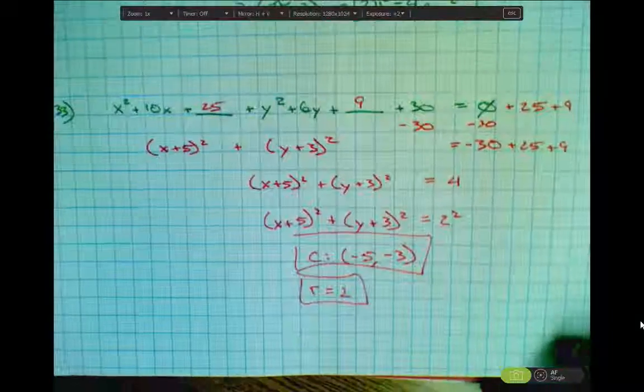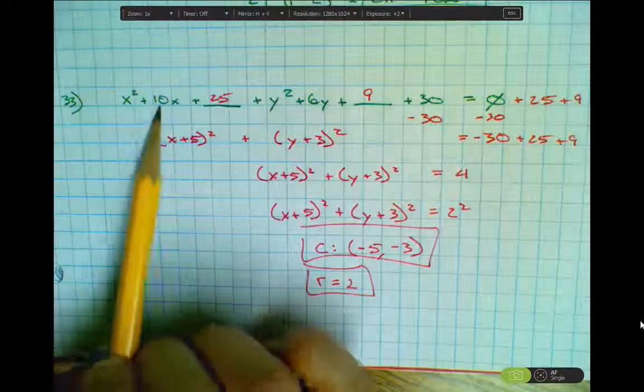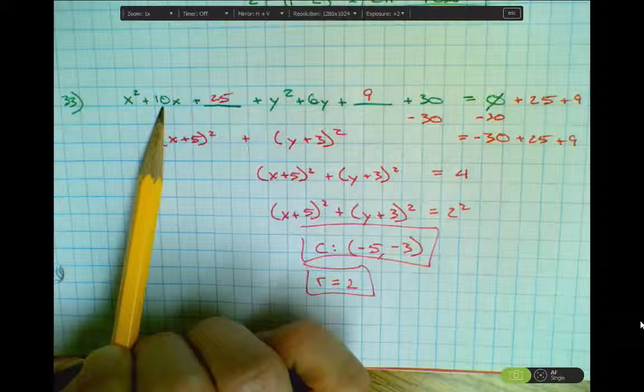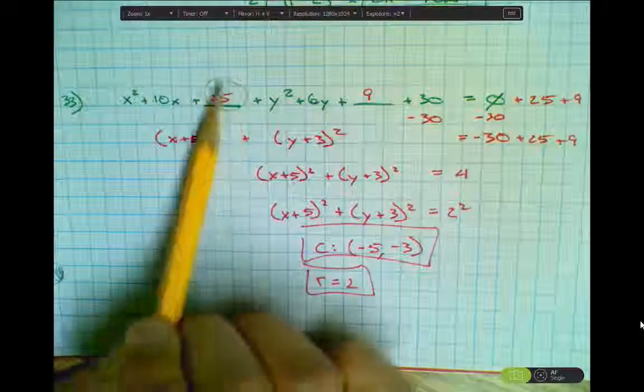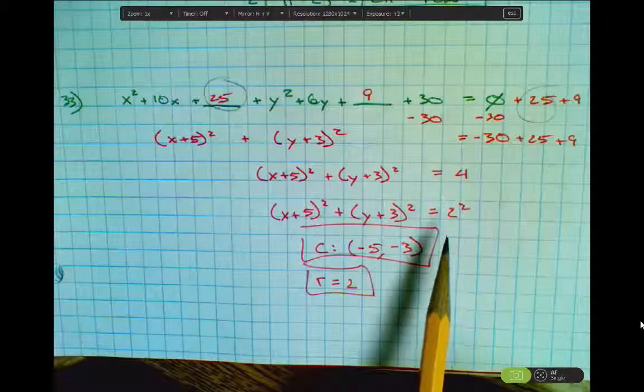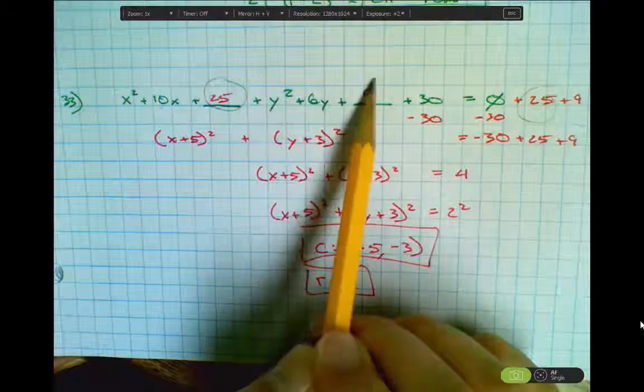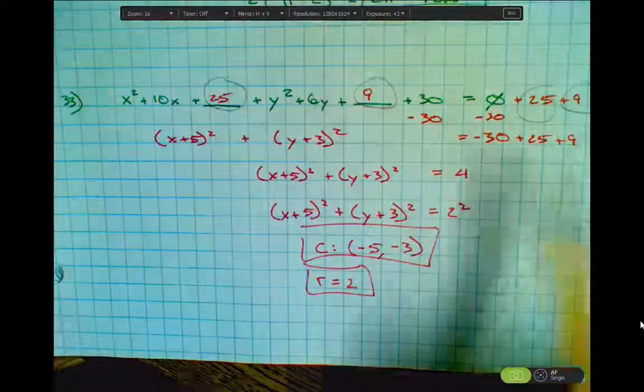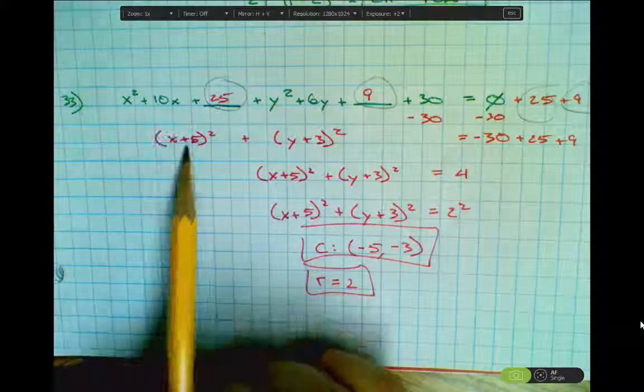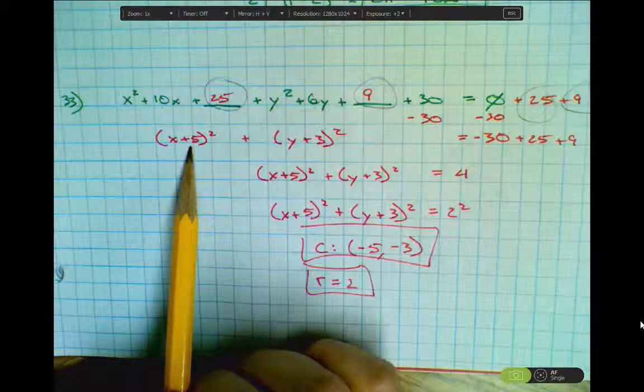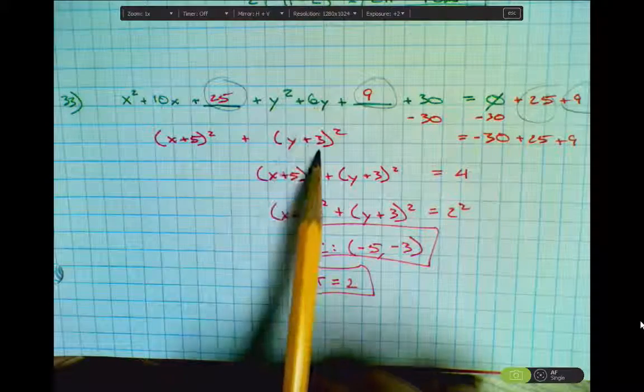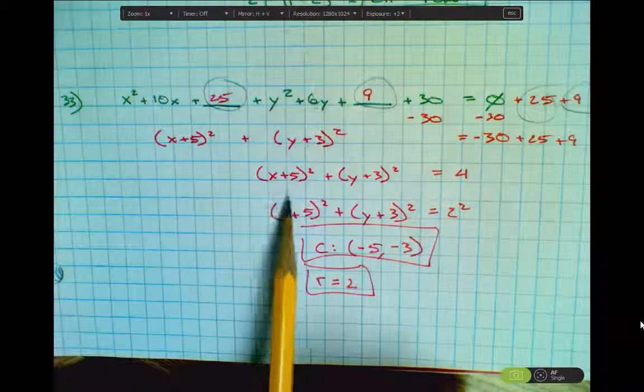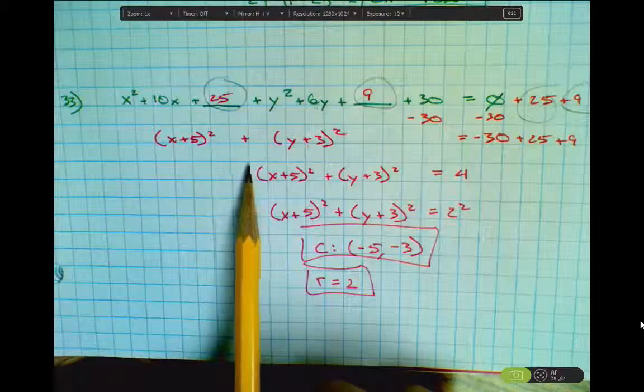The last question was number 33. To complete the square, I take half of the linear coefficient. So half of 10 is 5. 5 squared is 25. Whatever I do to one side, you've got to make sure to do to the other. Half of 6 is 3. 3 squared is 9. What multiplies to 25 and adds to 10? We get positive 5 and positive 5. Multiplies to 9, adds to 6. Positive 3, positive 3. And so we end up with this equation here.